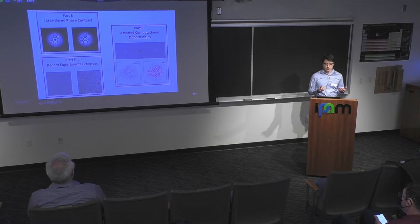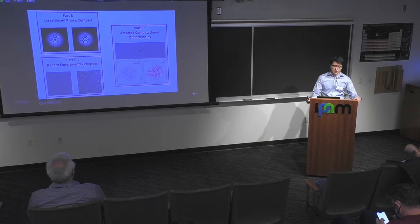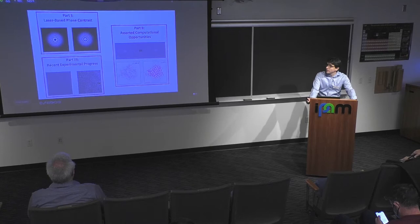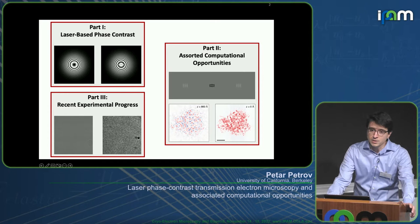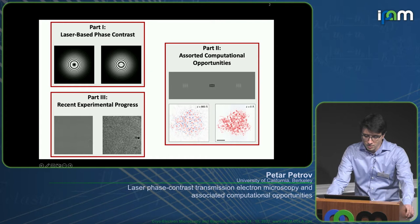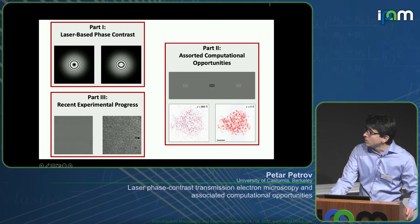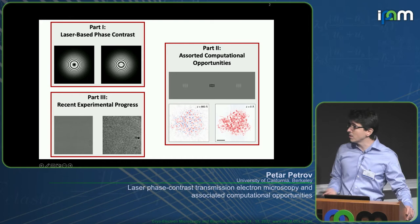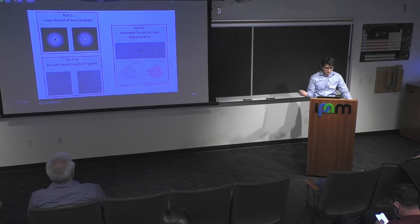My talk is divided into three parts. In the first part, I want to talk about phase contrast microscopy, how we plan to do it with a laser, and what that really does to the microscope's transfer function. In the second part, I'll transition into various computational opportunities, explored largely in theory with some experiment. In the third part, I'll give some updates on the experimental side of things.